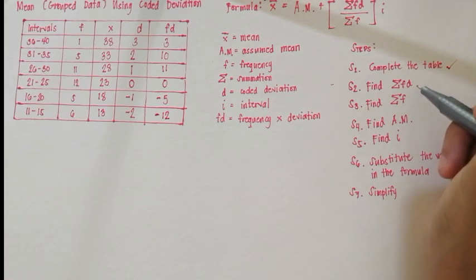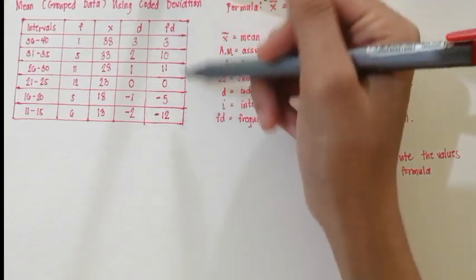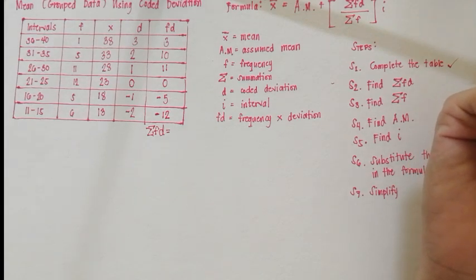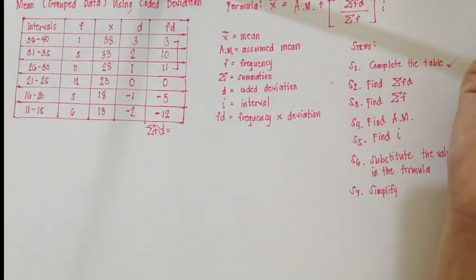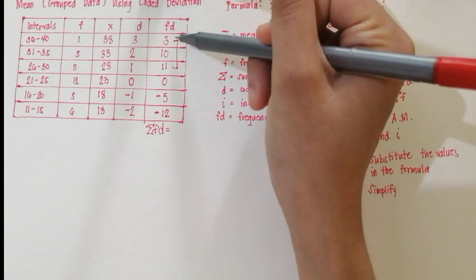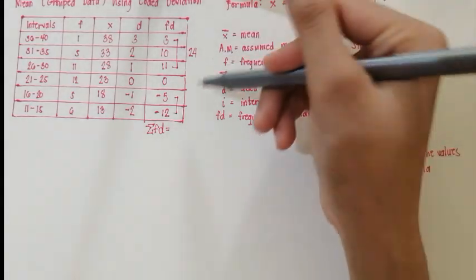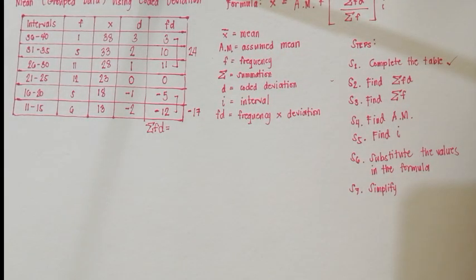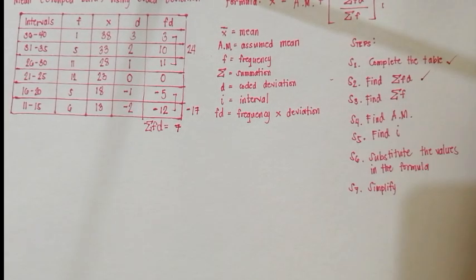Next, we need to find the summation of FD — just add all the FD values. If you're having a hard time adding positive and negative numbers, it's better to add the like signs first. Adding the positive numbers: 3 plus 10 plus 11 gives you 24. Adding the negative numbers: negative 5 plus negative 12 is negative 17. Then 24 plus negative 17 gives you 7. That's your summation of FD. Step 2 is done.